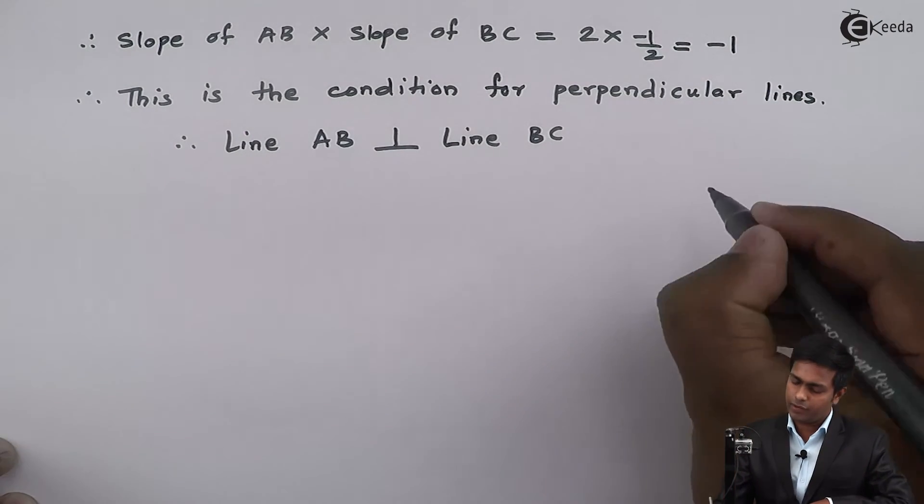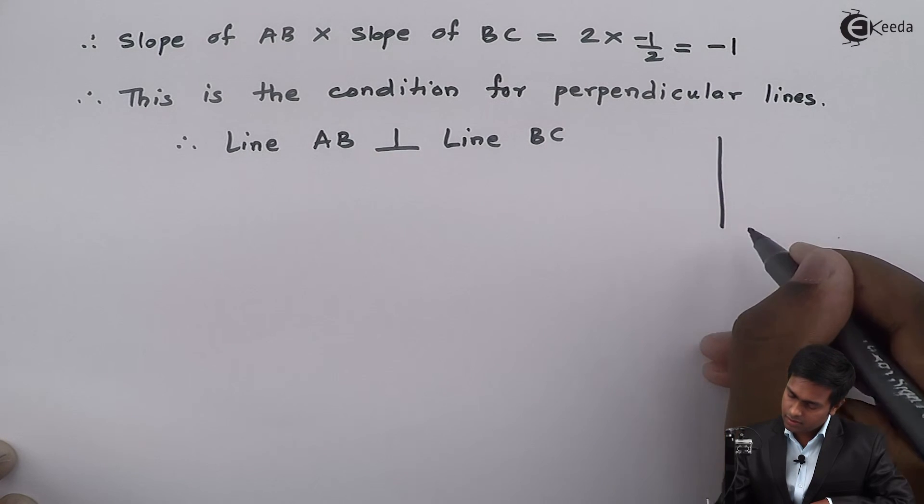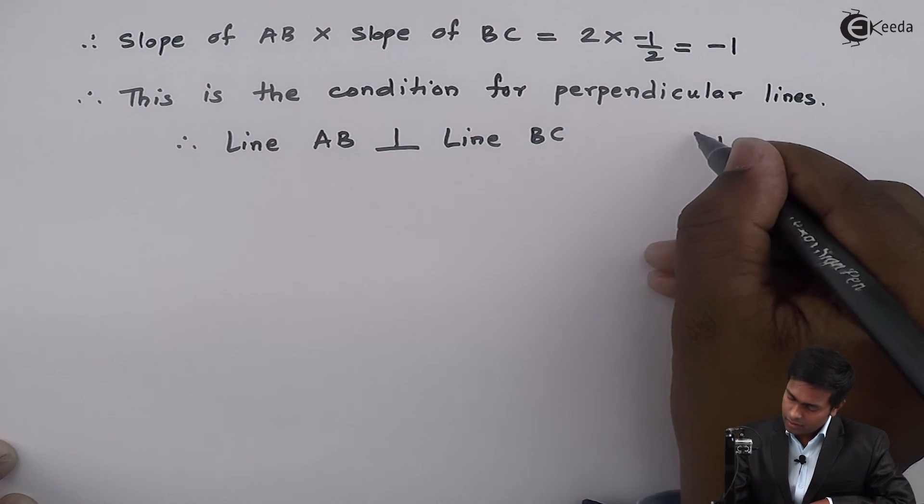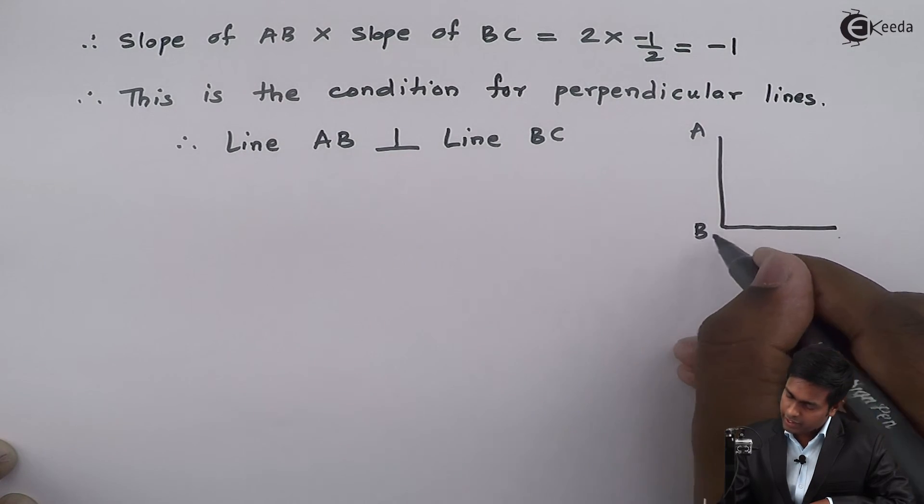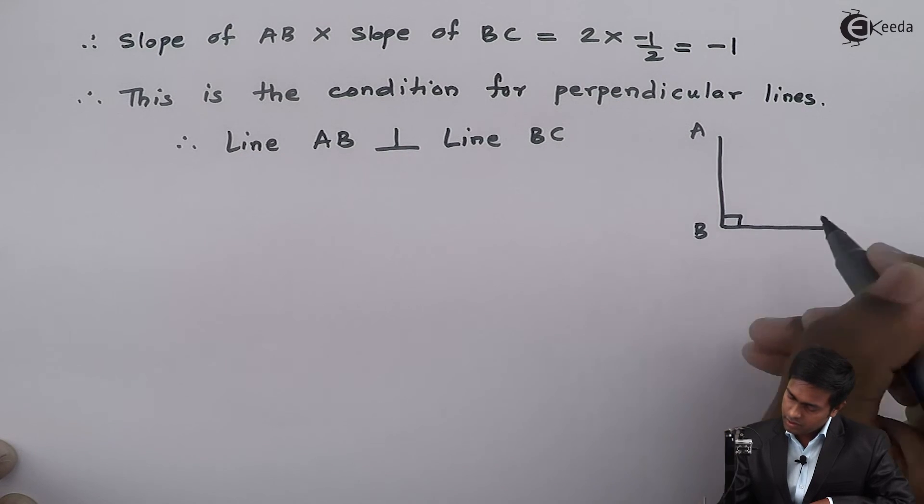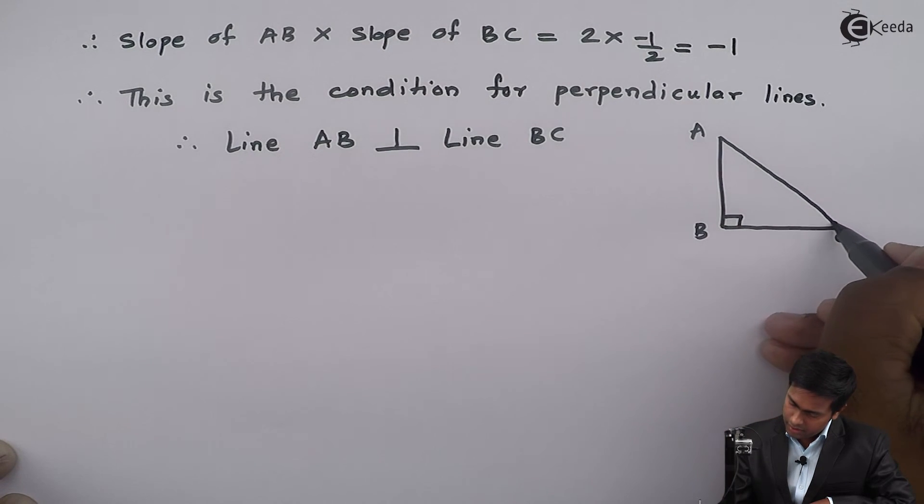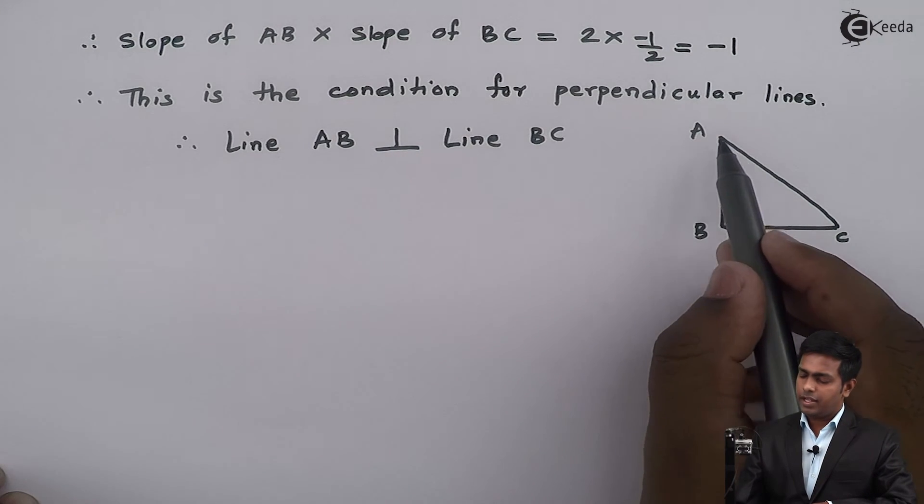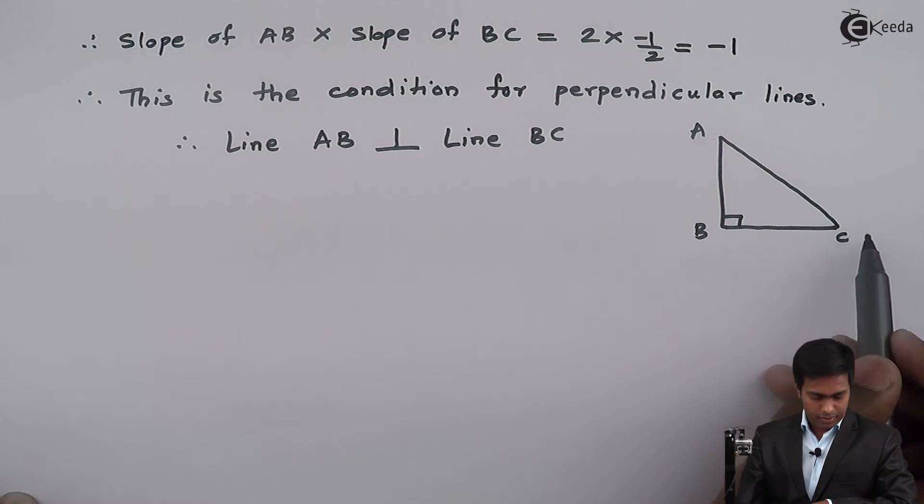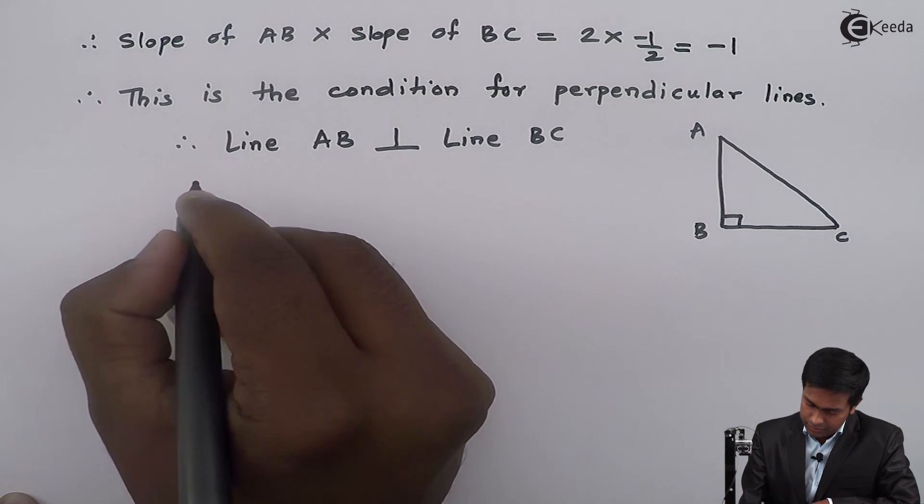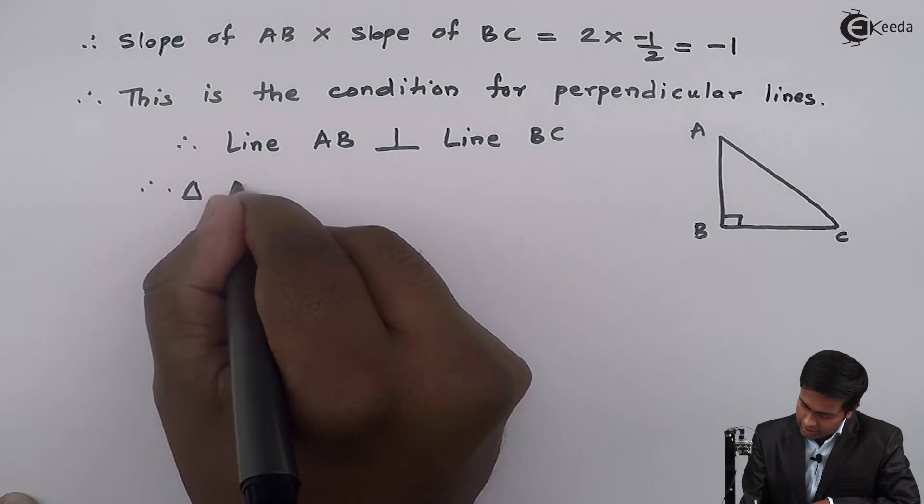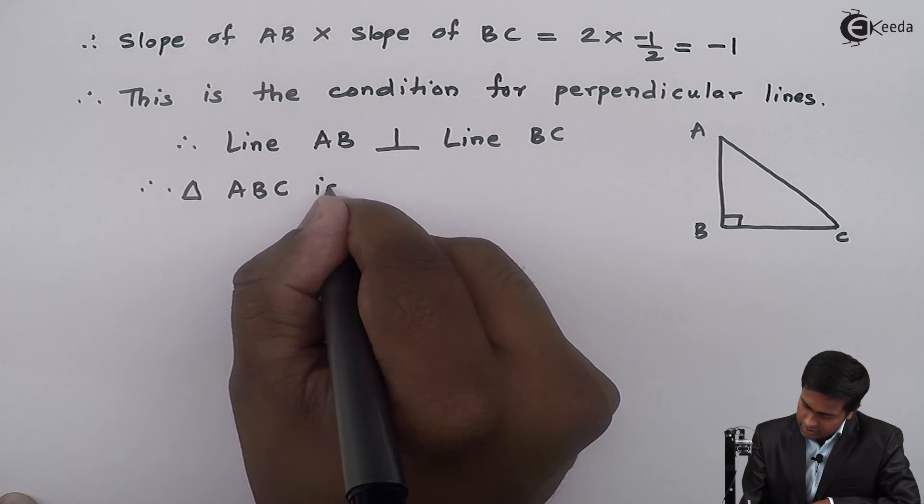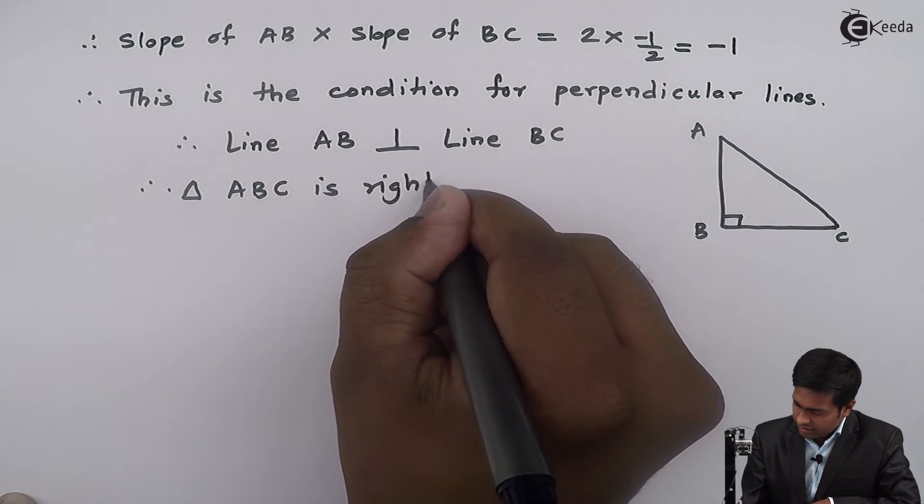If I draw the diagram, it will look like this: AB is perpendicular to BC, and this segment will become AC. Since AB is perpendicular to BC, we can say that triangle ABC is a right angled triangle.